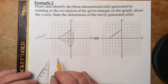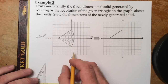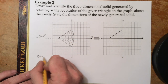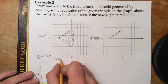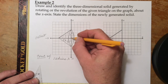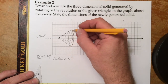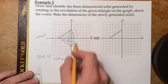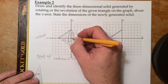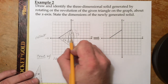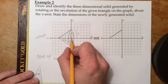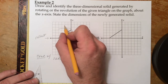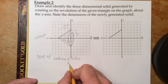They asked us to state the dimensions of this newly generated solid. A cone has a circular base, so we need the radius. The radius equals 3 units — we start from the center and go out to either point. Then we need the height. We start at the origin and count to the left up to the vertex point: that's four units. So the radius r = 3 units and the height h = 4 units.